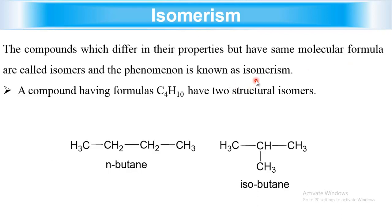Iso means same, merism means formula. So the compounds which have the same molecular formula but have different structures are called isomers.